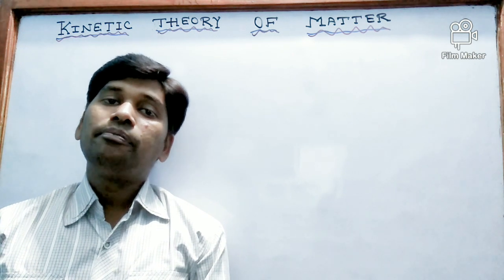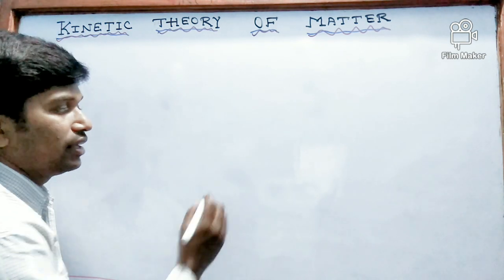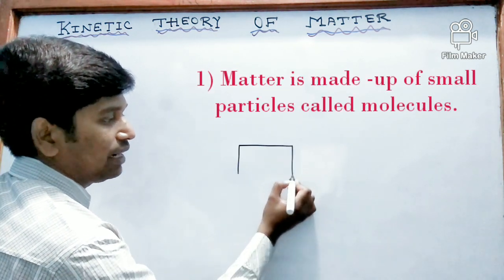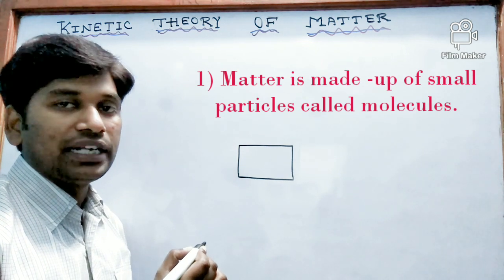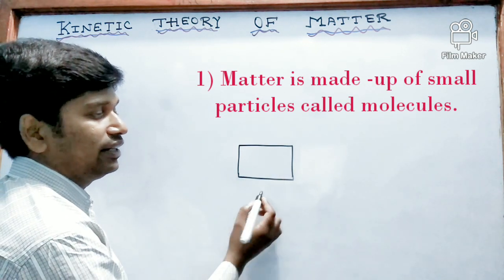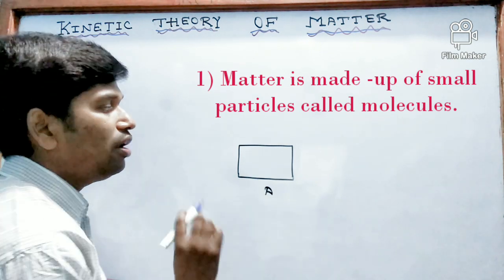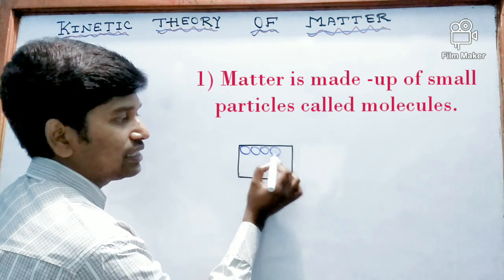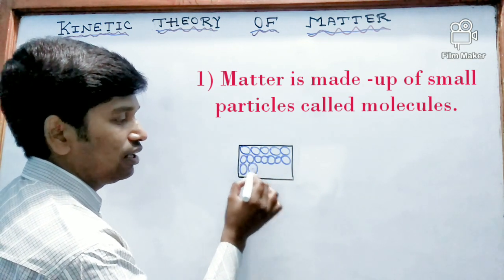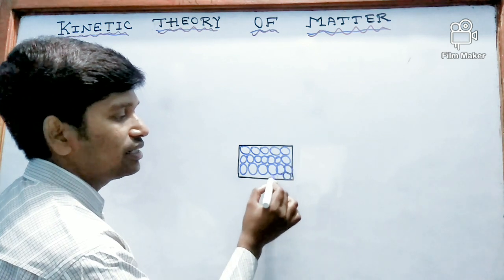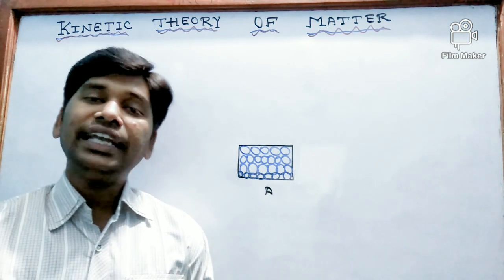The first assumption is matter is made up of small particles called molecules. Suppose this is a matter — anything which has mass and occupies a space is called matter. This matter is made up of small particles, and these small particles are called the molecules. So the first assumption is: all the substances, all the matters are made up of small particles called molecules.